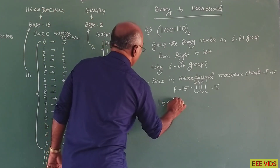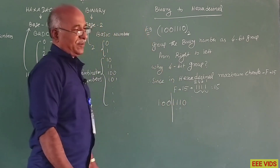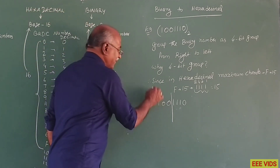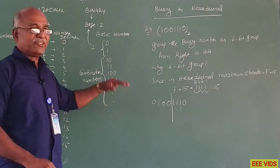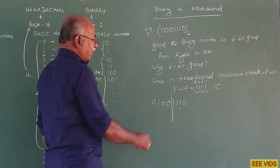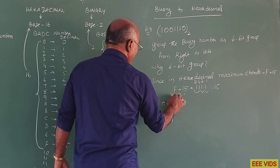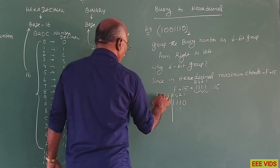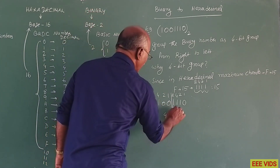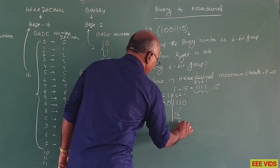So for our binary number 1, 0, 0, 1, 1, 1, 0 — first, form the 4-bit group. If the group has only 3 bits, we add a 0 to the left side. Then calculate: 2 power 0 = 1, 2 power 1 = 2, 2 power 2 = 4, 2 power 3 = 8. That gives us 1, 2, 4, 8. The value is 8 plus 4 plus 2 = 14. This is 14, and the corresponding hexadecimal number is E.